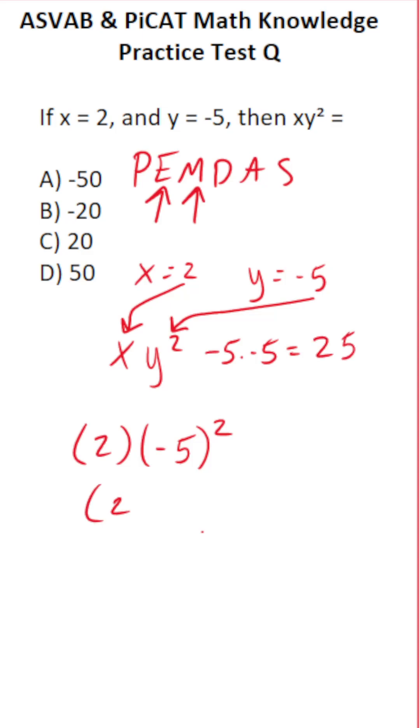So this becomes 2 times 25. 2 times 25 is 50, so the answer to this one is D, 50.